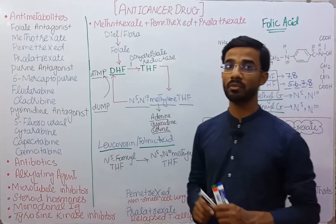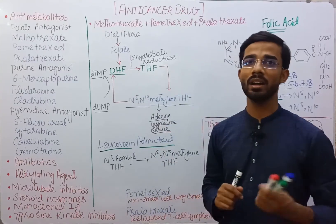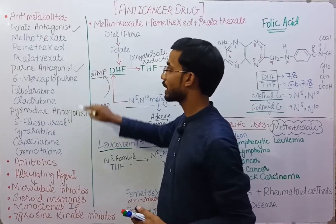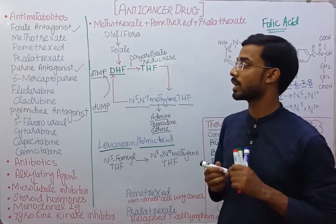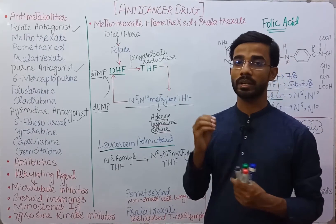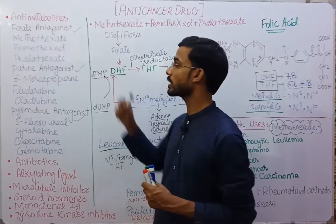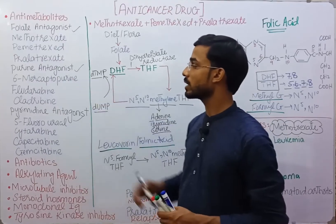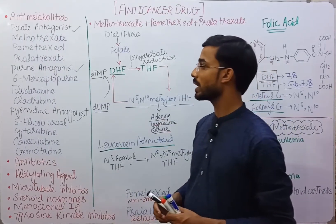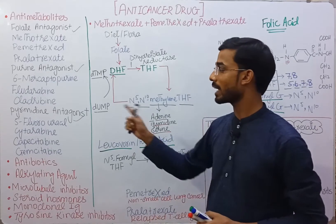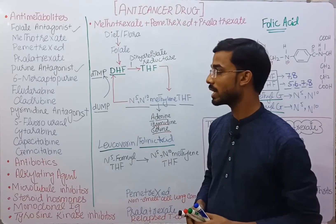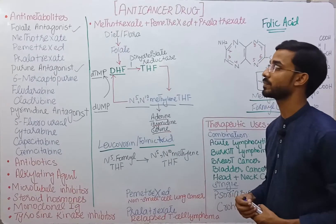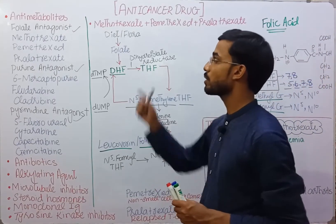The basic focus now is on anti-metabolites. They are in different categories like folate antagonists, purine antagonists, and pyrimidine antagonists. Folate antagonists include three drugs: methotrexate, pemetrexate, and pralatrexate. Purine antagonists include 6-mercaptopurine, fludarabine, and cladribine. Pyrimidine antagonists include 5-fluorouracil, cytarabine, capecitabine, and gemcitabine. We will focus on just folate antagonists.